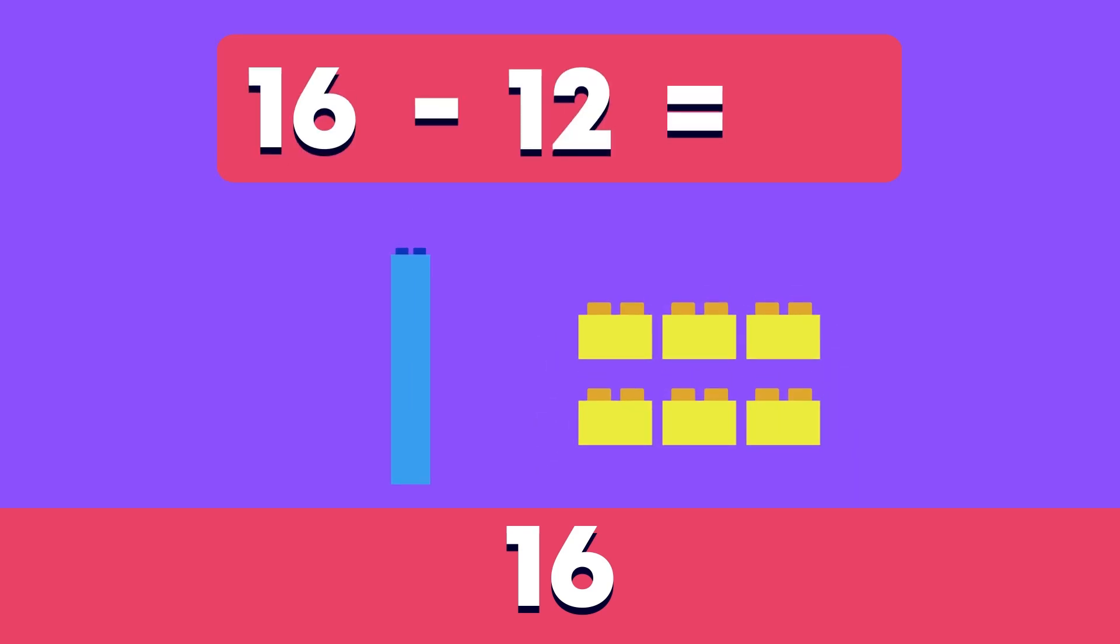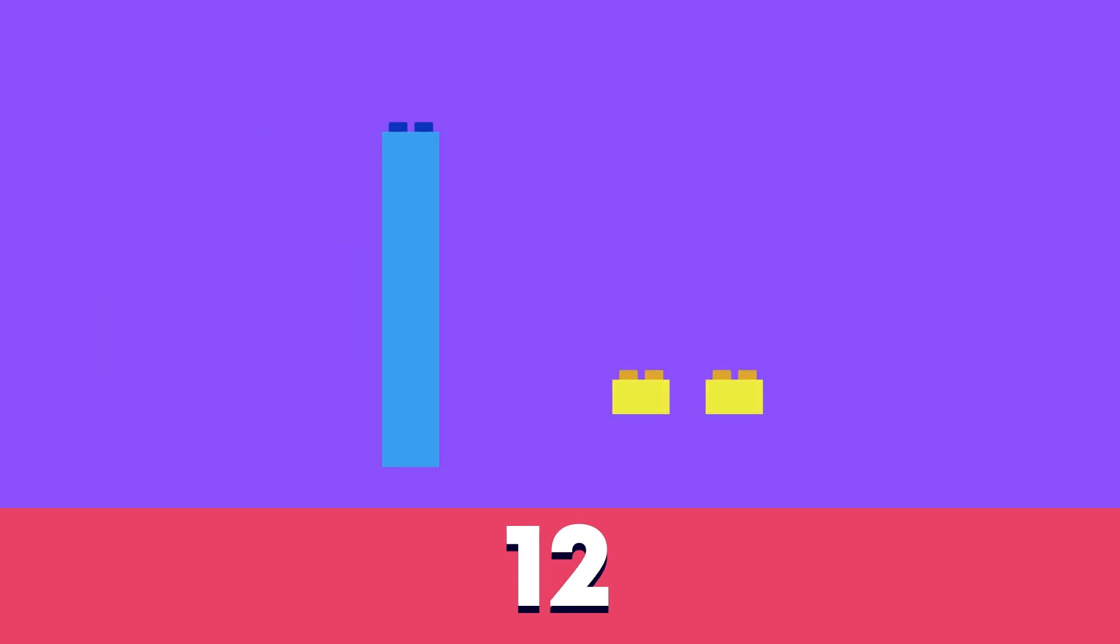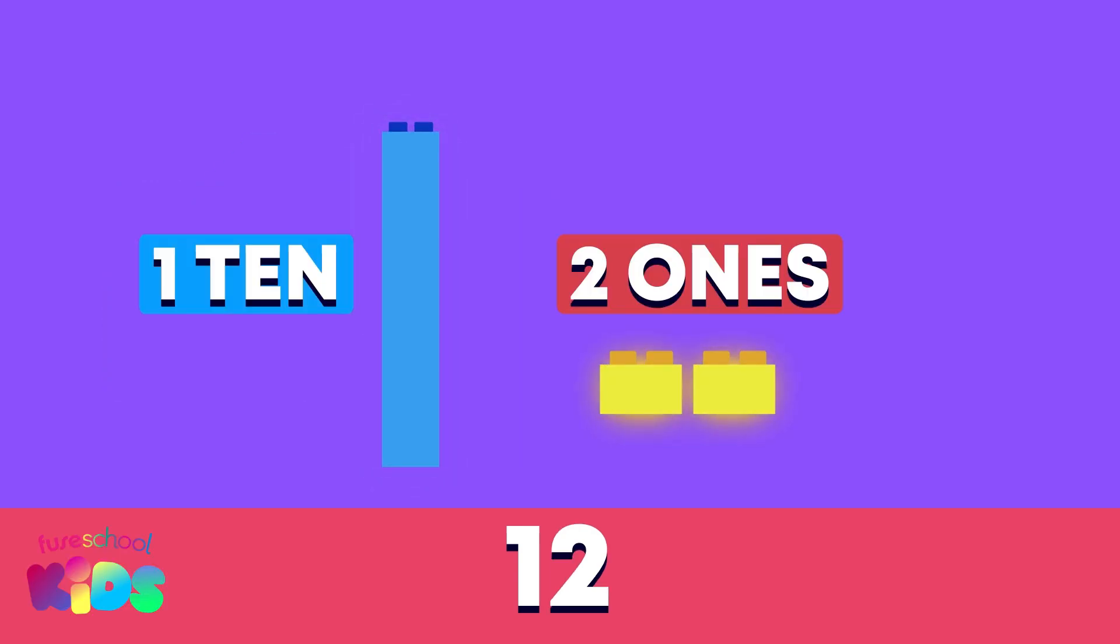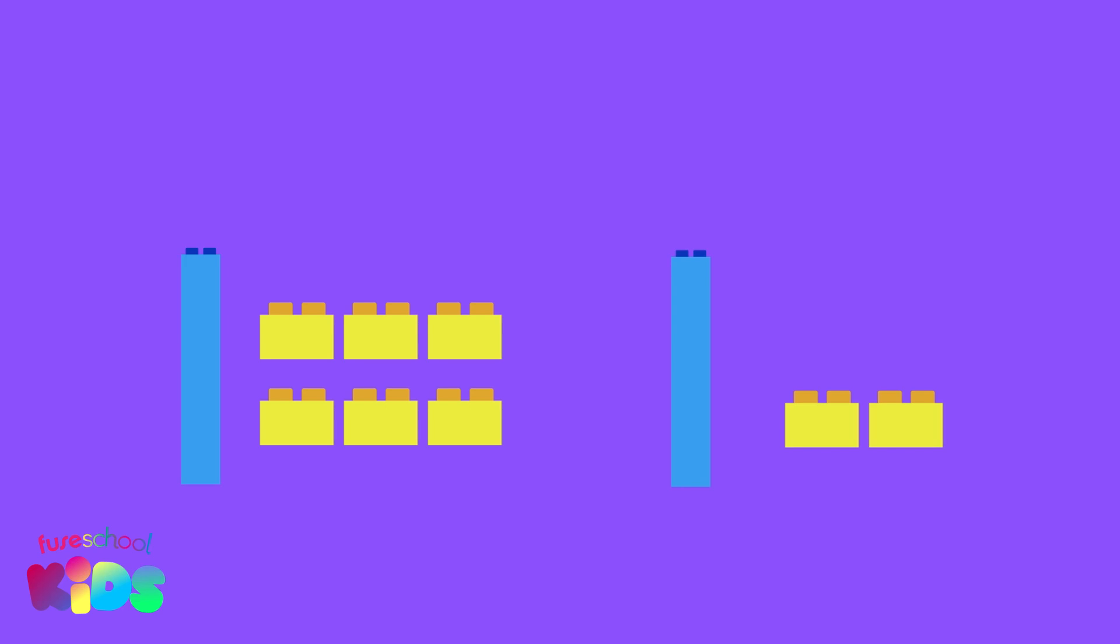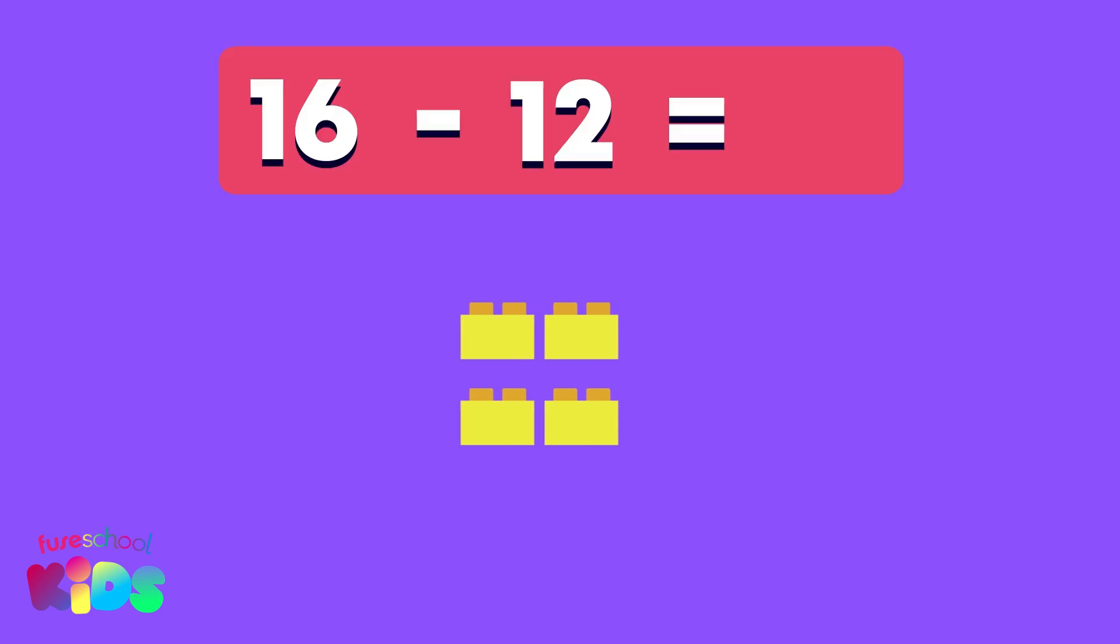Now we need to take away 12 from 16. 12 has one 10 and two ones. We need to take away one 10 like this and two ones like this. What is 16 minus 12? It's four.